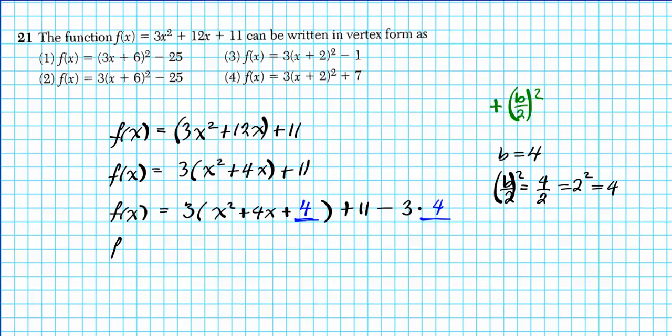What have we accomplished thus far? We have created a perfect square trinomial. Now, to factor this perfect square trinomial, we can use a shortcut. Just read the first and the last terms and bring down the middle sign. So that yields (x + 2)² quantity squared. That's the factored form of this perfect square trinomial, plus 11 minus 3 times 4, which is 12.